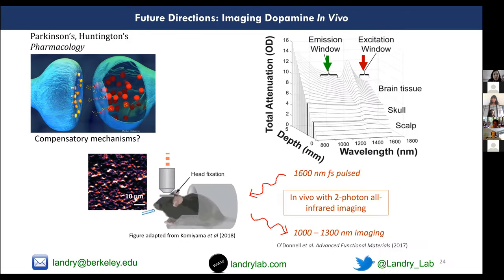Our future directions include further investigation into the basis of biological heterogeneity for drug responses in the brain. We're also developing infrared imaging techniques for through-skull imaging, enabling studies in vivo in awake and behaving animals, and querying through animal models of disease — such as Parkinson's and Huntington's — how disease states influence dopamine signaling in the brain.